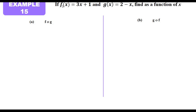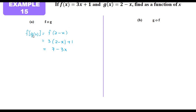Now look at this example. Given f(x) = 3x + 1 and g(x) = 2 − x, find f composite g. f composite g means we substitute g into f. Since g(x) = 2 − x, we substitute 2 − x for x in f(x): we get 3(2 − x) + 1, which equals 7 − 3x.